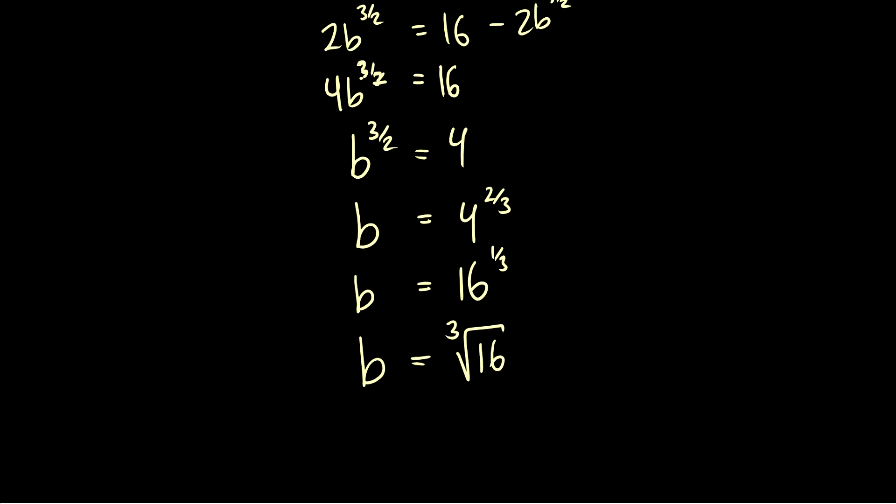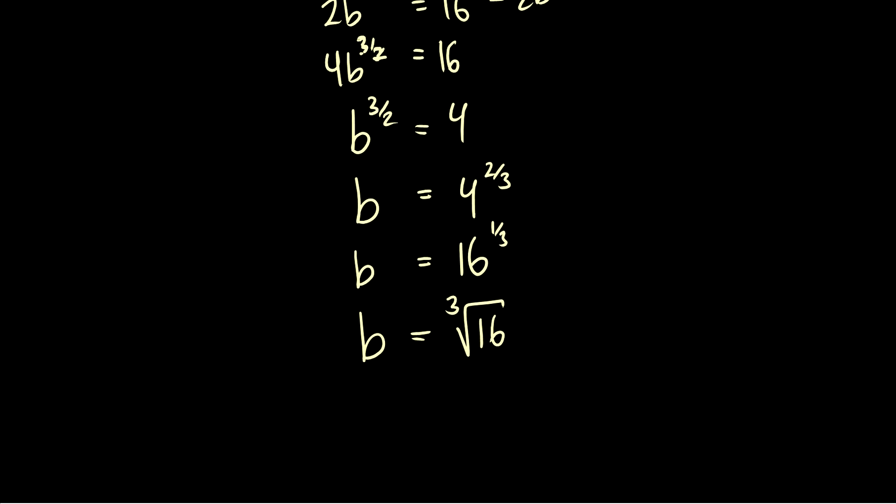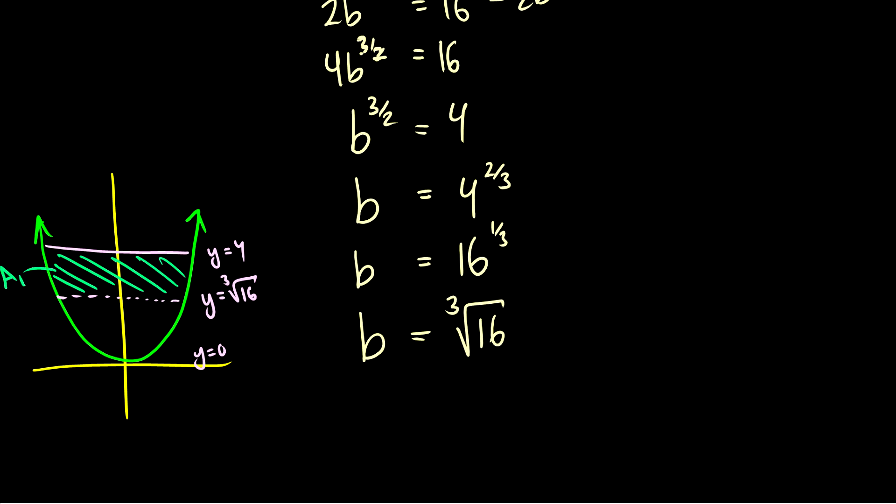So essentially what we're saying is if we have a parabola x squared and it's between y equals 4 and y equals 0, if we pick b equals the cubed root of 16, so say somewhere here y equals the cubed root of 16, then the top area which we'll call this a1 is equal to the bottom area which is a2.